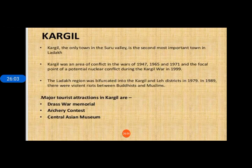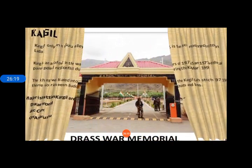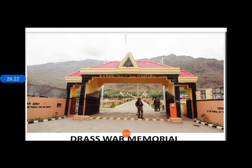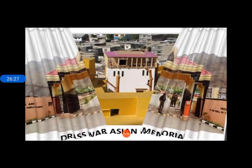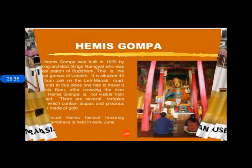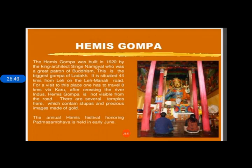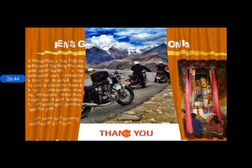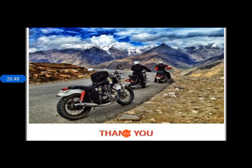Kargil is the only town in the Suru valley and the second important town of Ladakh, after Leh. The major tourist attractions of Kargil include the Dras War Memorial, archery contests, and the Central Asian Museum. Hemis Gompa is a famous Buddhist monastery built in the year 1620 by King Sengge Namgyal. The government is taking many steps for the economic and scientific development of Ladakh.